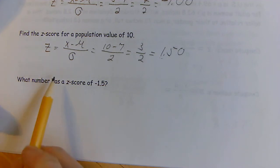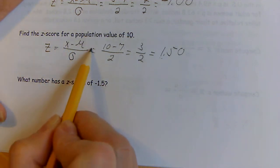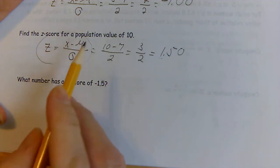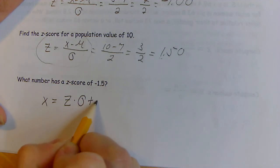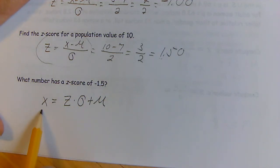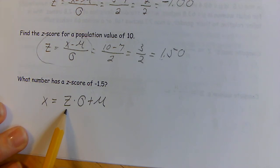What if we're asked what the population value or data value x is and they're giving you a z-score? We're going to take this formula and solve for x. So x = z·σ + μ. This is the formula we use when you're looking for x and you're given the z.